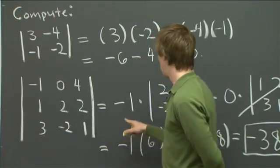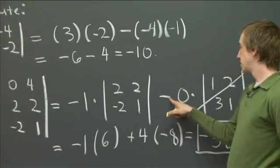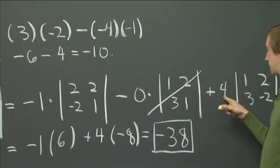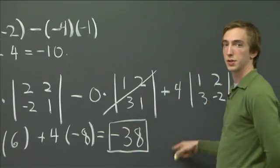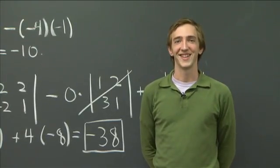So we got minus 1 times this cofactor, minus 0 times this cofactor, and then finally plus 4 times this cofactor. Altogether, we got minus 38. I'll leave it at that. Thank you.